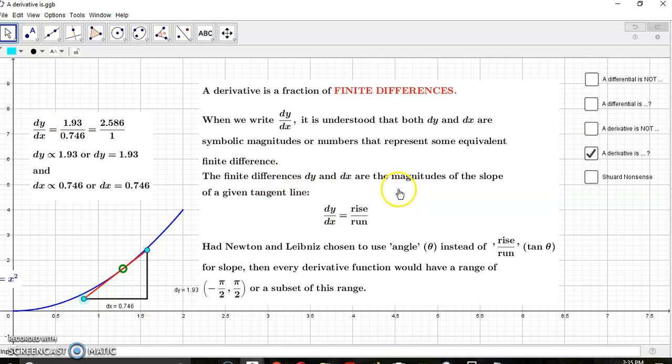The finite differences dy and dx are magnitudes of the slope of a given tangent line, of this red tangent line. In other words, dy to dx is rise over run. Had Newton and Leibniz chosen to use angle instead of rise over run, every derivative function would have a range of minus pi over 2 to pi over 2.